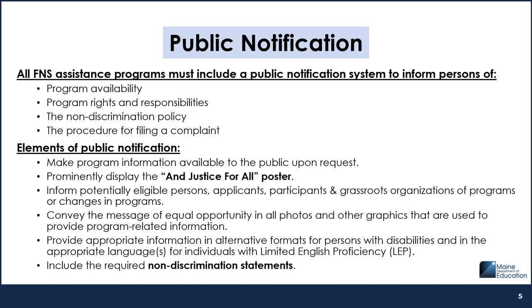All FNS assistance programs must include a public notification system to inform persons of program availability, program rights and responsibilities, the non-discrimination policy, and the procedure for filing a complaint. Elements of public notification include making program information available to the public upon request, prominently displaying the And Justice for All poster, informing potentially eligible persons, applicants, participants, and grassroots organizations of programs or changes in programs, conveying the message of equal opportunity in all photos and other graphics used to provide program-related information, providing appropriate information in alternative formats for persons with disabilities and in the appropriate languages for individuals with limited English proficiency, and including the required non-discrimination statements.